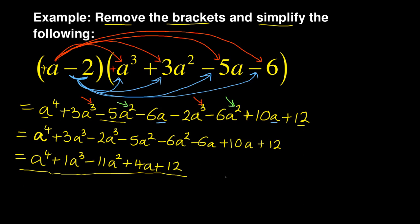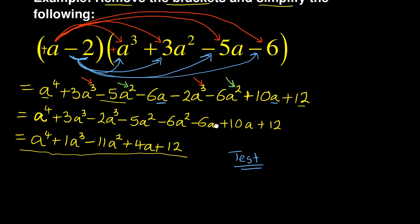As I usually do, you can actually test your answer to see if it is correct. So what I do is I choose any value of A — just any value. You can say let A be a thousand or just a simple value, for example, let A be equal to 3 — just any simple number. You're going to substitute. Remember, this is the testing — you don't have to include this in your final solution; you do it in your rough work.